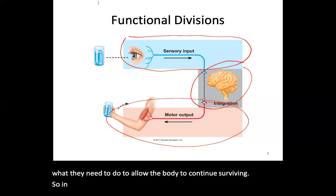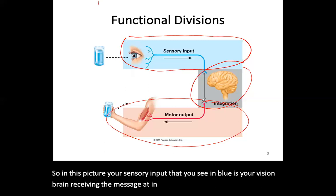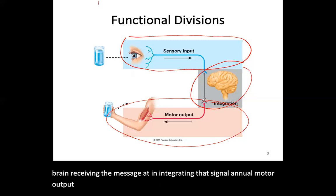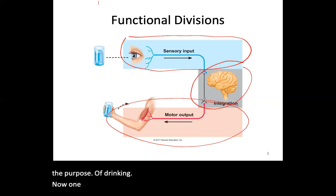In this picture, your sensory input shown in blue is your vision. The brain receives and integrates that signal, and your motor output is your skeletal muscle flexing — causing you to lift up a glass for the purpose of drinking. Motor output includes effects on all of your glands as well as the three types of muscles.